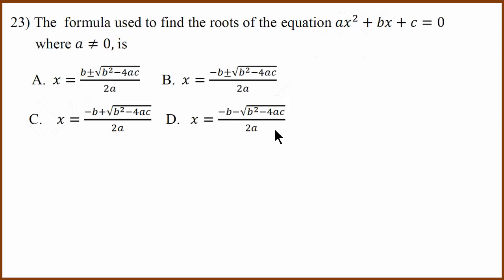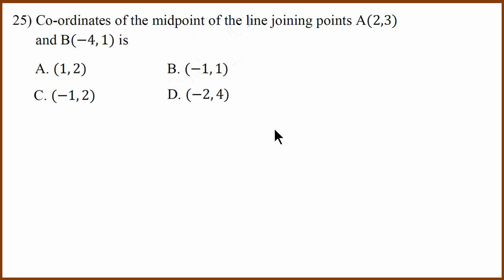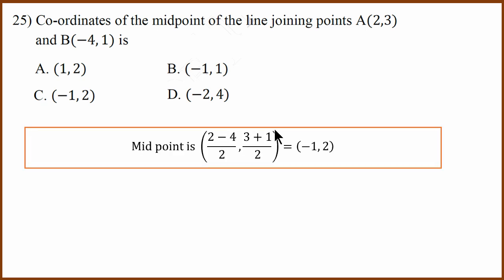Twenty-third question is a straight formula question for roots: x equals negative b plus or minus square root of b squared minus 4ac, divided by 2a. Twenty-fourth question: again a formula question — the distance formula. Answer D. Twenty-fifth question is the midpoint formula: x1 plus x2 divided by 2. Substituting x1 and minus 4, dividing by 2 gives minus 1, and adding y1 and y2 divided by 2 gives 2. The correct answer is C.